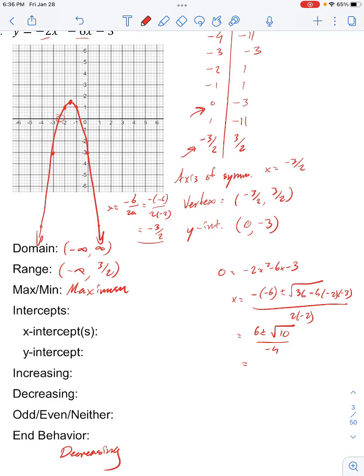It doesn't really matter all that much. So we have 6 plus square root of 10 over negative 4, 0. And then we have the other x-intercept at 6 minus square root of 10 over negative 4. Our y-intercept, we know from before, is 0, negative 3.